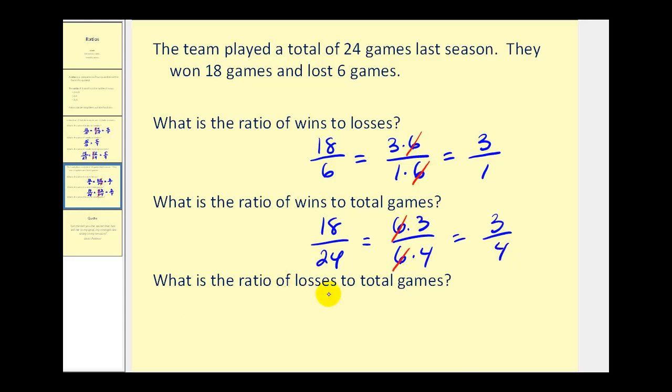Lastly, the ratio of losses to total games. There were 6 losses and 24 total games, so 6 to 24. Since 24 is equal to 6 times 4, the 6 would simplify out, and the ratio would be 1 to 4.